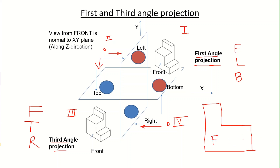All views are shown in an L-shaped format with the front view common to both projection methods. In third angle projection, the right view is placed to the right of the front and the top view is placed above the front. In first angle projection, the front view remains common, but the left view is still placed to the right of the front view, and the bottom view is placed on top of the front view. Only the side view and plan change based on the projection method.